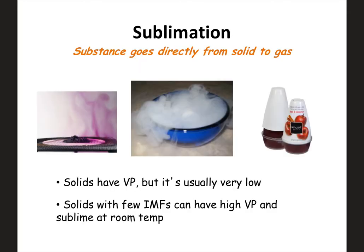Sublimation occurs when a substance goes directly from the solid to the gas phase. Solids do have a vapor pressure, but it's usually very low. However, there are some solids with lesser IMFs that can have a higher vapor pressure and actually sublime at room temperature — think of things like iodine or dry ice. They can sublimate and go directly from a solid to a gas at room temperature because of these lesser IMFs and the higher vapor pressure allowing them to directly enter the gas phase.